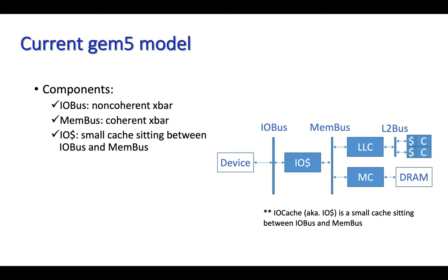There are three main components involved. First is Iobus, a non-coherent crossbar that connects I/O devices to the CPU chip. Second, we have membus, which models the on-chip network connection between LLC banks, memory and I/O devices. Third, we have a small cache called I/O cache, which at a high level plays the role of an integrated I/O controller in real CPU chips for maintaining cache coherency for DMA requests that come from I/O devices.